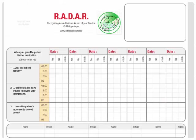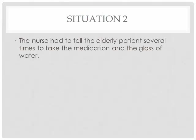Now you can put your answer on the form and put your answer at noon. Here are the right answers. Was the patient drowsy? No. Did the patient have trouble following instructions? Yes. And were the patient's movements slowed down? No. What we wanted to stress is that the nurse had to tell the elderly patient several times to take the medication and the glass of water — a very clear indication that the patient was not following the nurse's instructions.